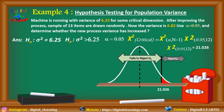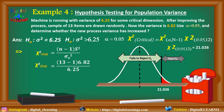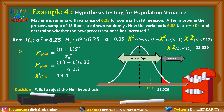Now we calculate the chi-square statistic: n minus 1 times s-squared divided by variance. Putting in the values — 13 minus 1 times 6.82 divided by 6.25 — we get chi-square calculated as 13.1. Plotting this value in the distribution, it falls in the fail-to-reject region because 13.1 is less than 21.026. So there is insufficient evidence to conclude that the variance for this critical dimension has increased significantly at 0.05 level of significance.